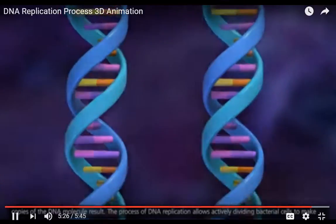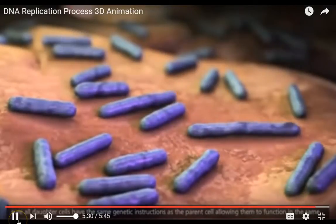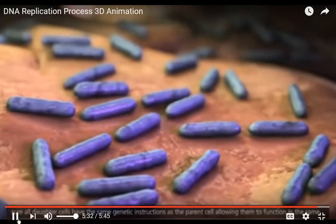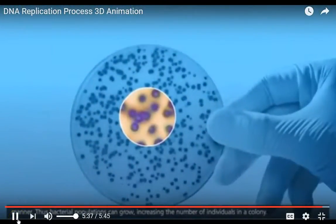The process of DNA replication allows actively dividing bacterial cells to make sure all daughter cells have the same genetic instructions as the parent cell, allowing them to function in the same manner. Thus, bacterial populations can grow, increasing the number of individuals in a colony.